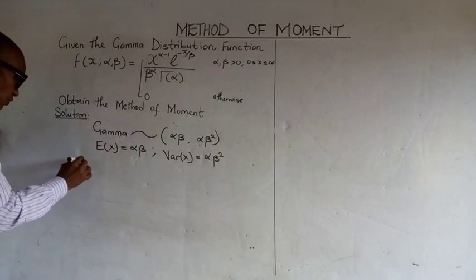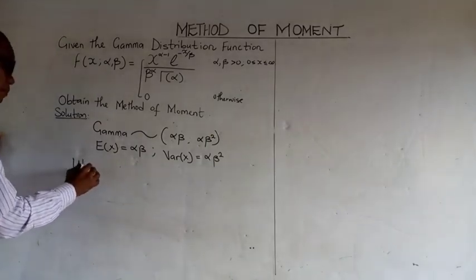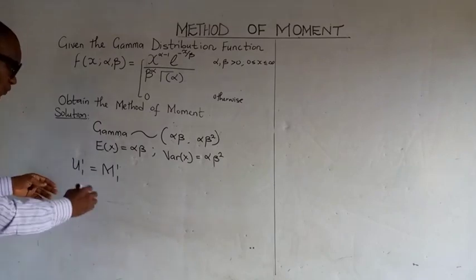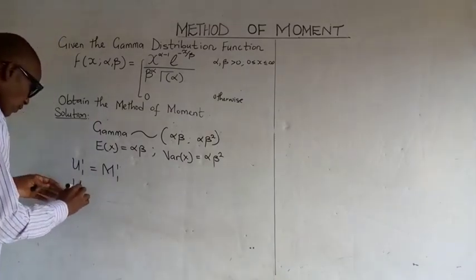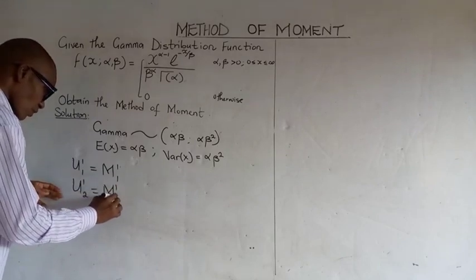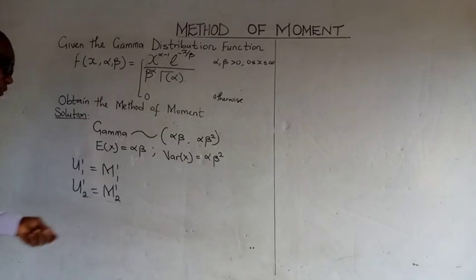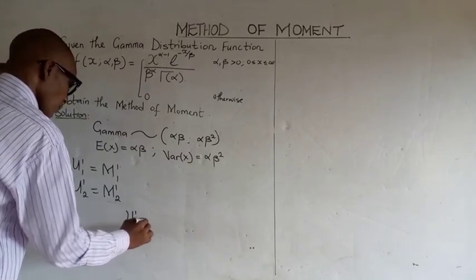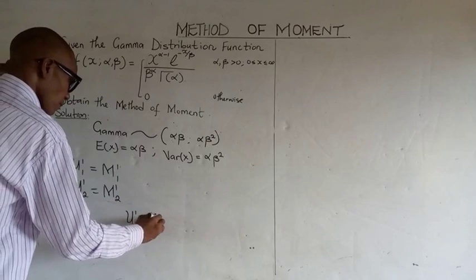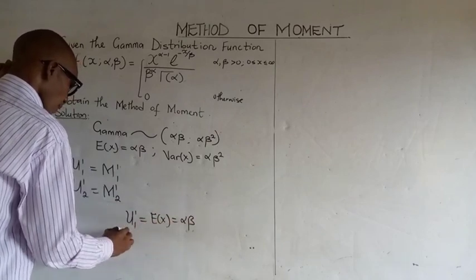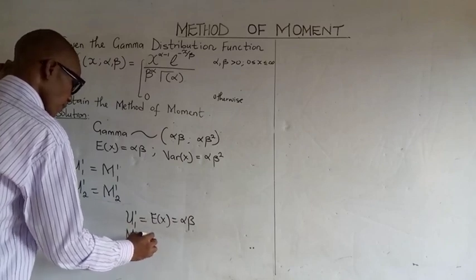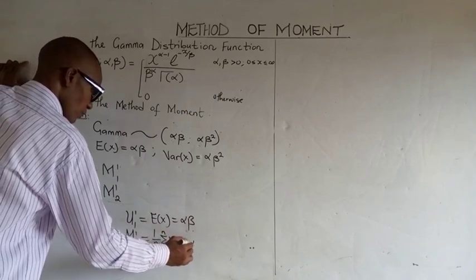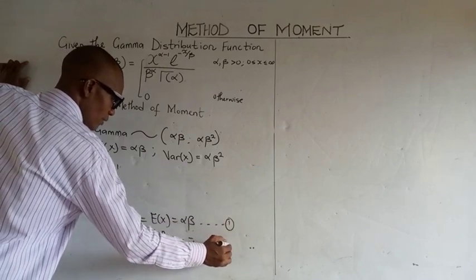We know that the solution to the method of moments is when the population mean is equal to the sample mean. We can also recall that mu 2 for the second moment is solved similarly. So our mu 1 is equal to the expected value, which is alpha beta, and m 1 is equal to the sample mean, which is x bar. Let's call this equation 1 and equation 2.